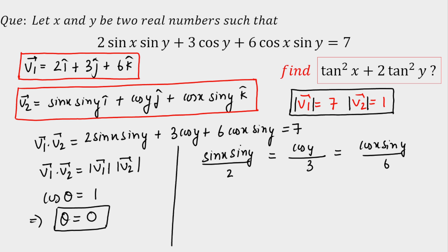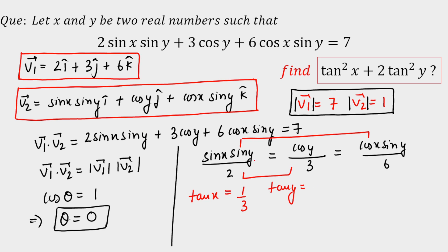Comparing the first and third ratios, sin(y) cancels out, giving tan(x) = 1/3. Comparing the first and second ratios, sin(y)/cos(y) = tan(y) = (2/3) × (1/sin(x)). Since tan(x) = 1/3, making a right triangle gives a hypotenuse of √10, so sin(x) = 1/√10. Therefore tan(y) = 2√10/3.